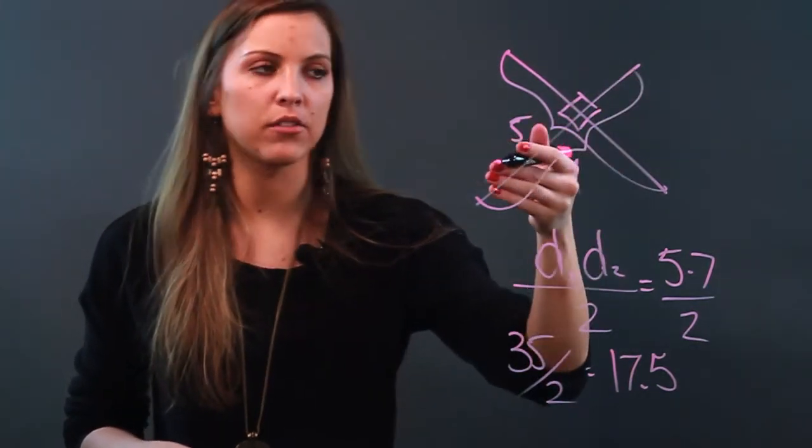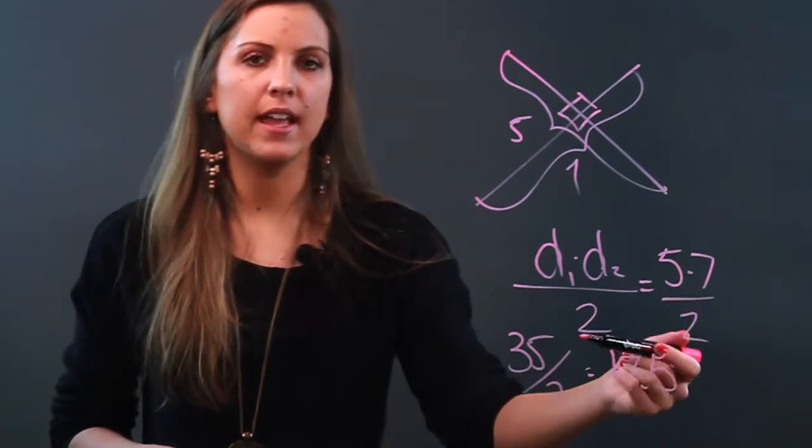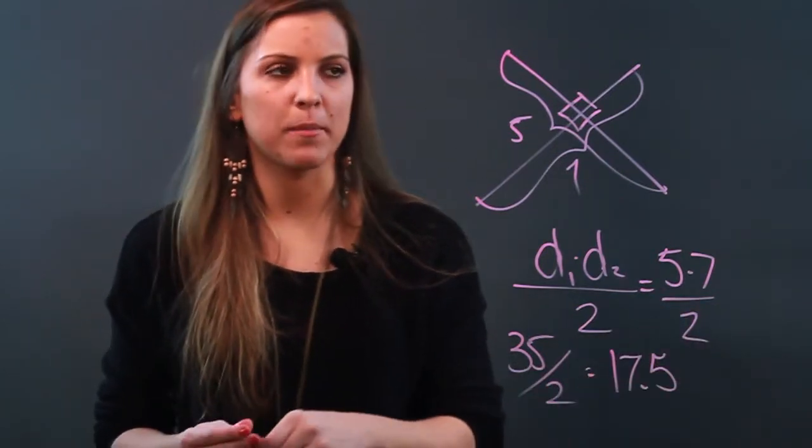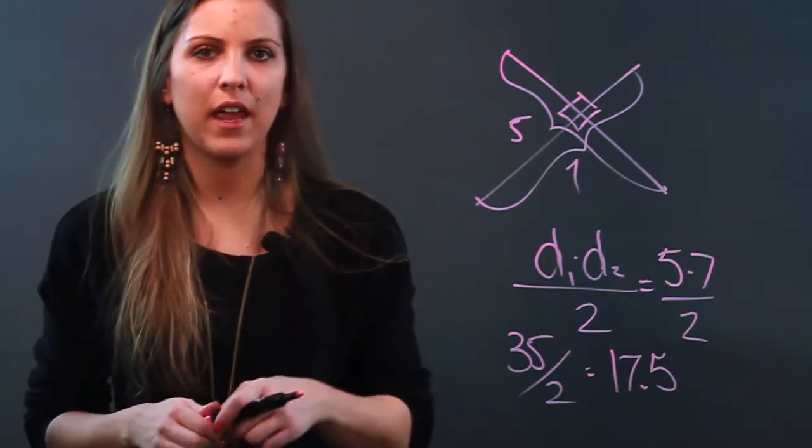Diagonal 1 times diagonal 2 and divide that by 2 to get the area of my trapezoid. So given the diagonals, as long as they're perpendicular, that is how you find the area of a trapezoid.